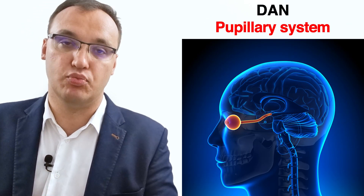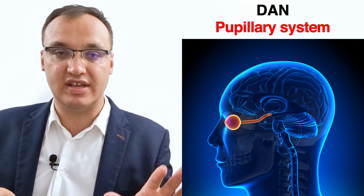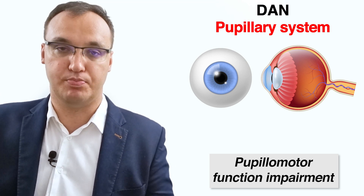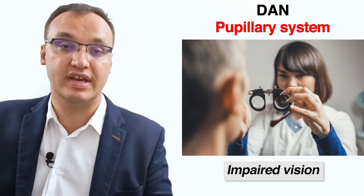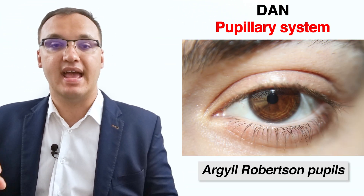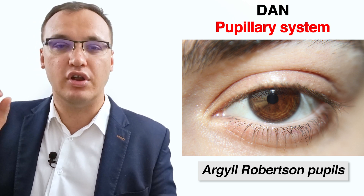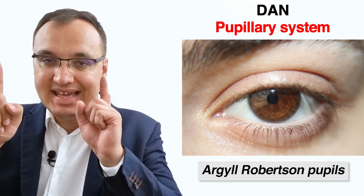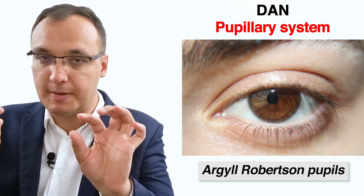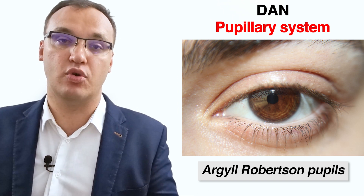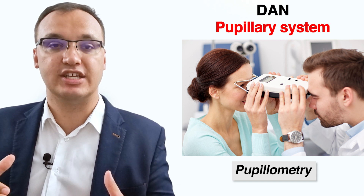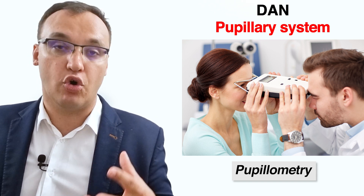Finally, let's look at the pupils. There are two main dysfunctions. First, pupillomotor function impairment, meaning the muscle controlling the eye's pupil is affected, which can lead to impaired vision. Second, Argyll-Robertson pupils — these are very small, bilateral pupils that constrict on a near object but do not constrict when exposed to bright light. Pupillometry is used to diagnose these eye dysfunctions and is needed to offer the best treatment.